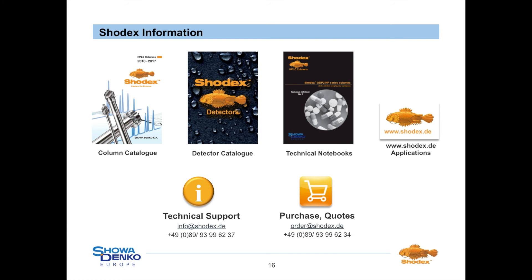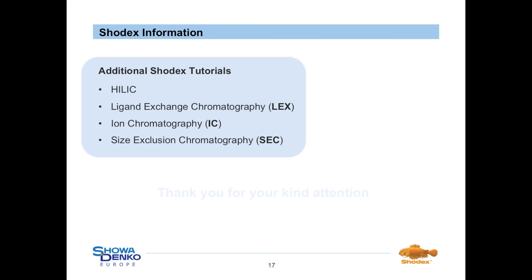If you need further information, please register on our website at www.shodex.de. There you can find PDF files for download, including our column and detector catalogues, technical notebooks, and access to our application database. For support, please contact us via info@shodex.de. For quotes or purchase orders, please send an email to order@shodex.de. We also offer further tutorials covering HILIC, ligand exchange, ion and size exclusion chromatography. Thank you very much for your kind attention.